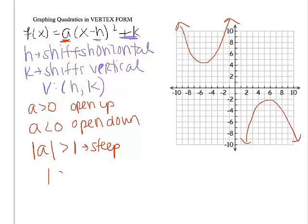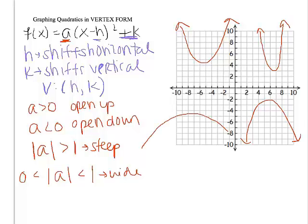And if the absolute value of a is some sort of fraction, meaning that it's between 0 and 1, some sort of proper fraction, then that's going to make it a little bit wider. A parabola that is steep could look something like this, awfully skinny. And a parabola that is wide would look something like that.